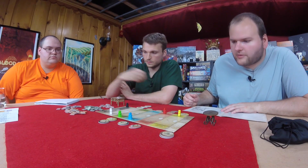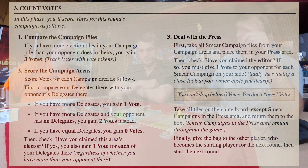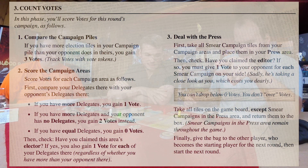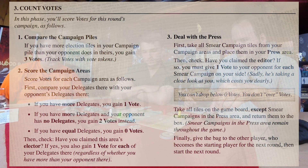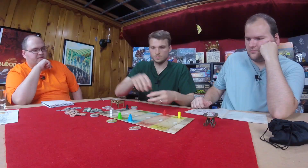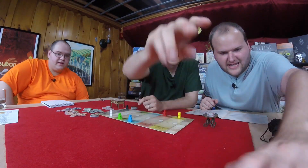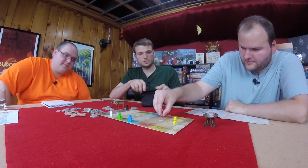Once all tiles have been taken from the board, the round is over and players collect their votes for the round. Votes are earned based on number of delegates, electors collected, and the size of campaign piles. However, the player who has collected the editor figure must give one vote to their opponent for each smear campaign they've collected. Between rounds, the first player is swapped and all tiles, aside from smear campaigns, are removed from the game and replaced with new ones from the bag. Smear campaigns stay in play for the entire game. Once the four rounds have been finished, the player who has collected the most votes has won the election and the game. Now let's get started.